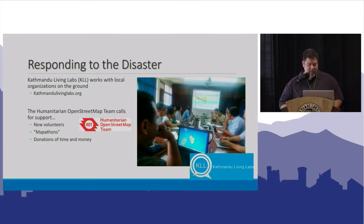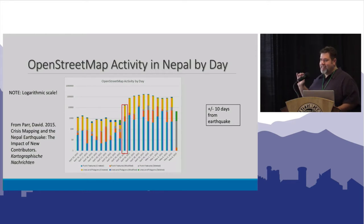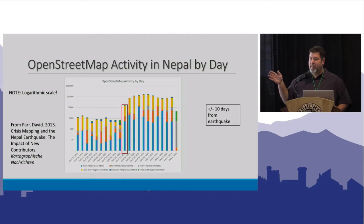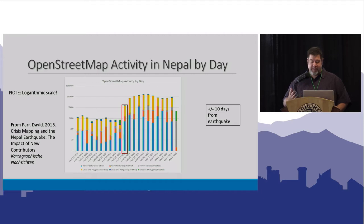If we look at the response around the world, it's actually a pretty incredible response. Unfortunately this chart is logarithmic. That red box is the date of the Nepal earthquake, and I'm looking at the number of people who mapped in Nepal for the 10 days prior and the 10 days after. There's actually a ten-fold increase in the amount of mapping activity in terms of changes, adds, and deletes in the 10 days after compared to the 10 days before.